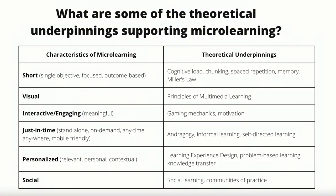On the table on the left, we've listed some of the most important characteristics of microlearning that align with the definition we presented earlier: short, visual, just-in-time, interactive, engaging, and social. The theories on the right — cognitive load, chunking, spaced repetition, andragogy, problem-based learning, social learning, and communities of practice — are just a few of the ones that support the key characteristics of microlearning. They've helped us identify quality microlearning and develop effective microlearning content for different purposes.